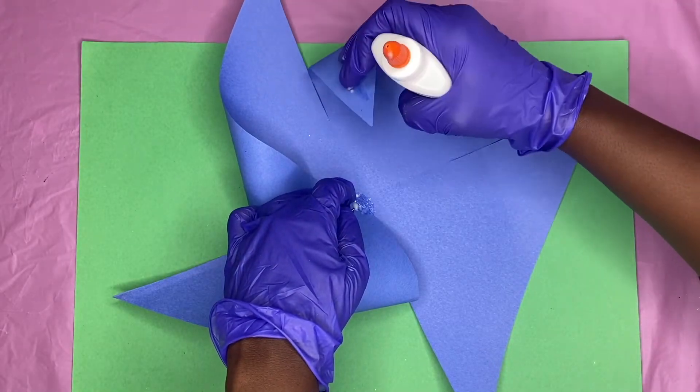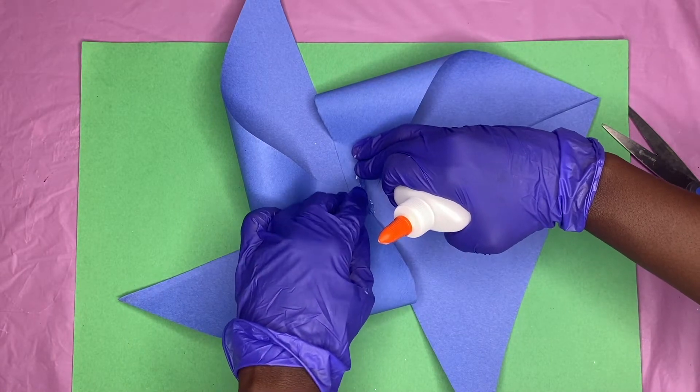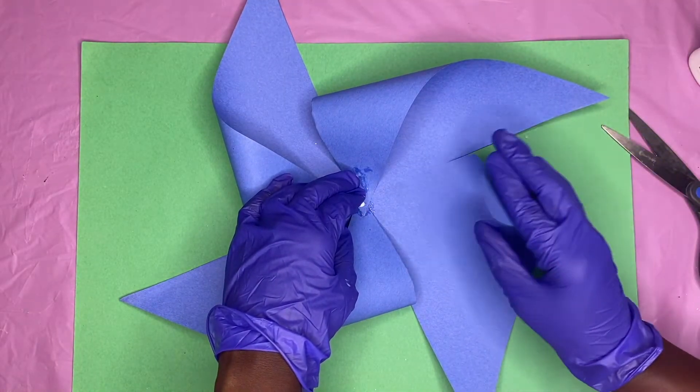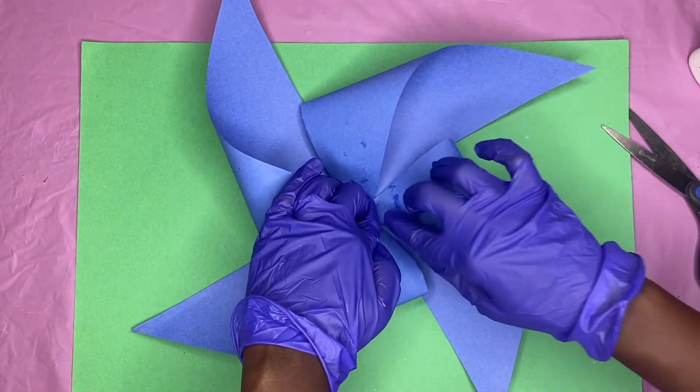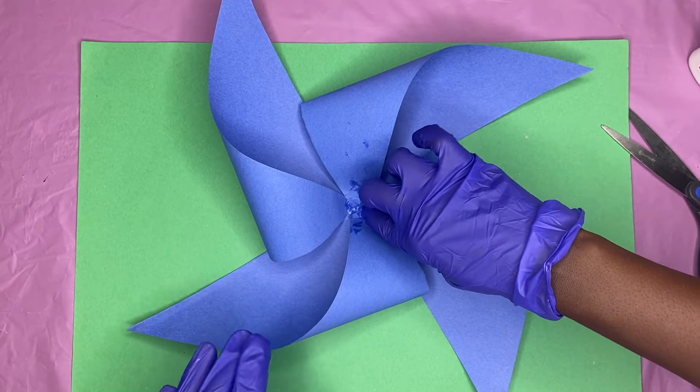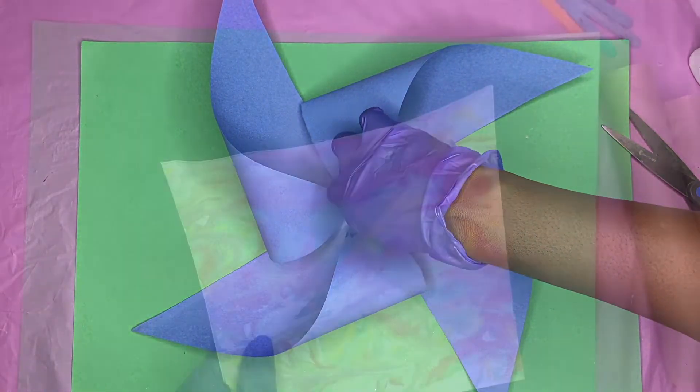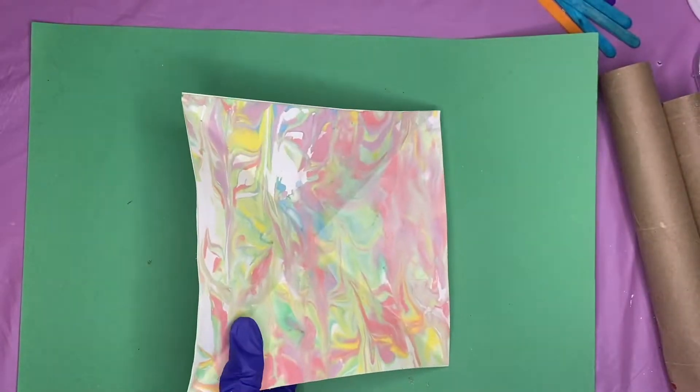So basically I'm folding the right side of each of the triangles to the inside like this, and you're going to make them all meet in the center because that's going to be our pivot point and let it sit until it dries. Now the bad thing about liquid glue is it's gonna take a minute to dry, that's why I'm still holding it. But if you want it to be faster, I would use hot glue or glue stick.